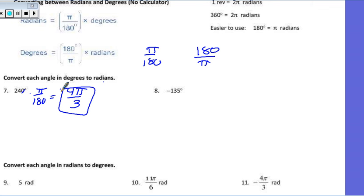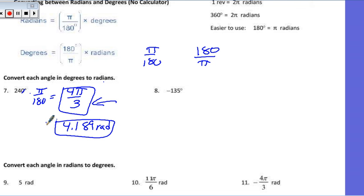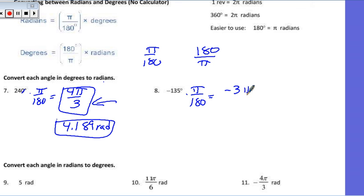It does have decimal forms — your calculator gives radians in decimal forms. We want all our answers exact, so it looks like 4 pi over 3, but it would be about 4.189 radians. It doesn't matter if it's a negative degree — the negative just shows whether we're going counterclockwise or clockwise. Multiplying by pi over 180 reduces to negative 3 pi over 4.